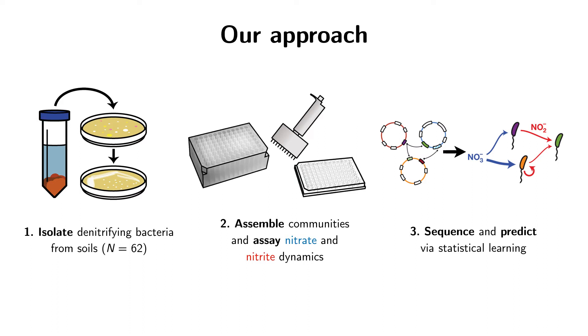We then assemble these isolates into defined communities in the lab and assay the dynamics of nitrate and nitrite, the two intermediates of denitrification that we can measure in high throughput. We then relate these dynamics observations to the genomic composition of the communities via statistical learning.